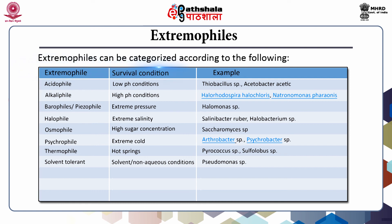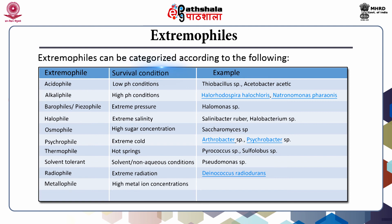Radiophiles are microbes that grow under extreme radiation — Deinococcus radiodurans is a classical example. Metallophiles are microbes able to withstand high metal ion concentrations in their surrounding environment, like Ferroplasma species and many more. Finally, xerophiles are microbes that grow in extremely dry and desiccating conditions.